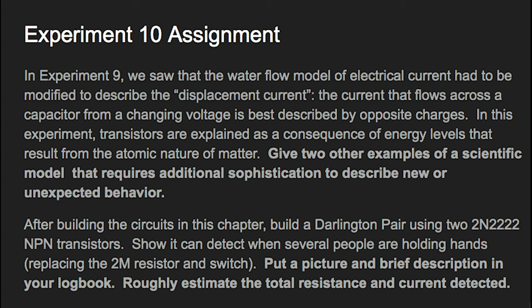Now for the building assignment, the Darlington pair is not covered in the textbook, but I would like you to try to build it using two 2N2222 NPN bipolar junction transistors.